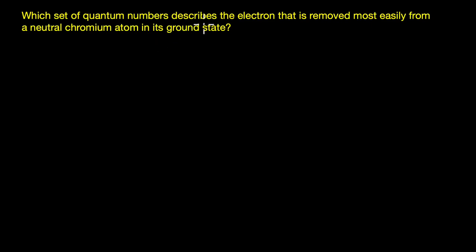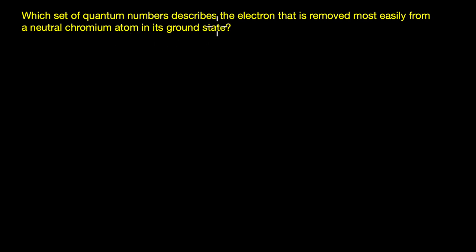Now that we are familiar with quantum numbers, let's solve a couple of questions. The first question says: which set of quantum numbers describes an electron that is removed most easily from a neutral chromium atom in its ground state? This looks lengthy but it's pretty straightforward — you need to identify the most ionizable electron and figure out which set of quantum numbers describes it.